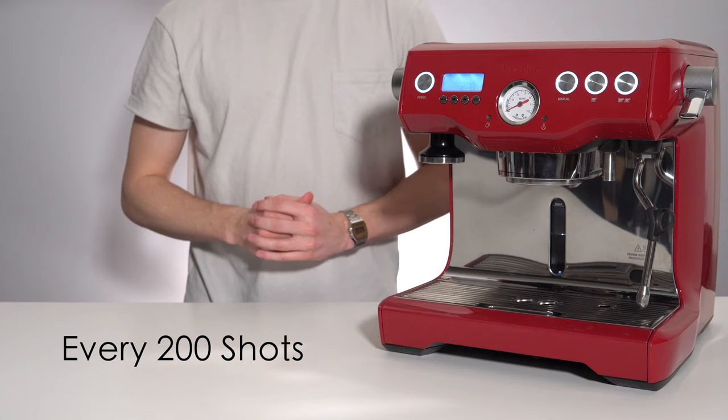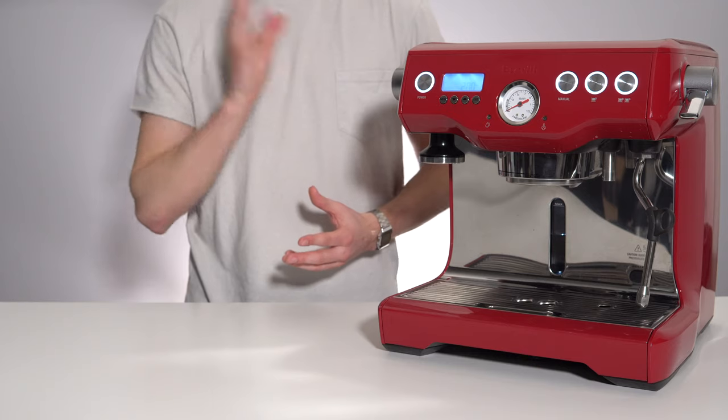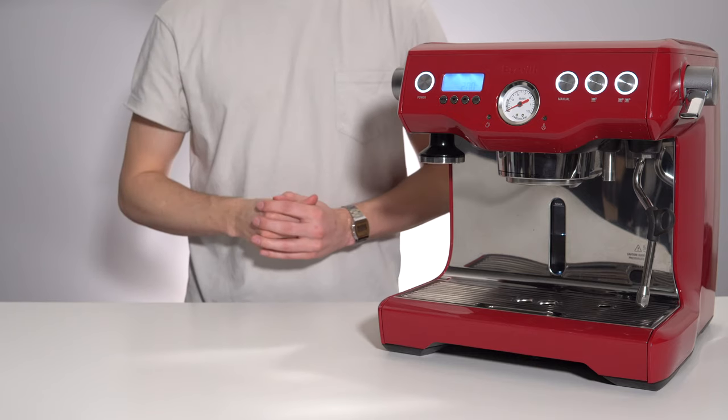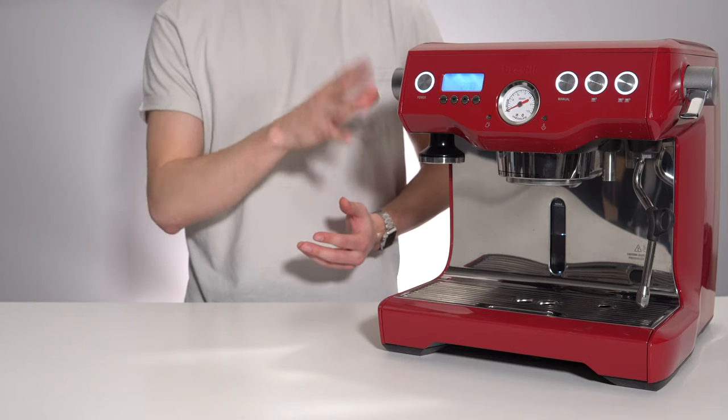Every 200 shots or so your machine will be telling you that it needs to be cleaned. This is very important to ensure the longevity of your Breville espresso machine. Let's go through how to run that cleaning cycle on the Breville Dual Boiler.